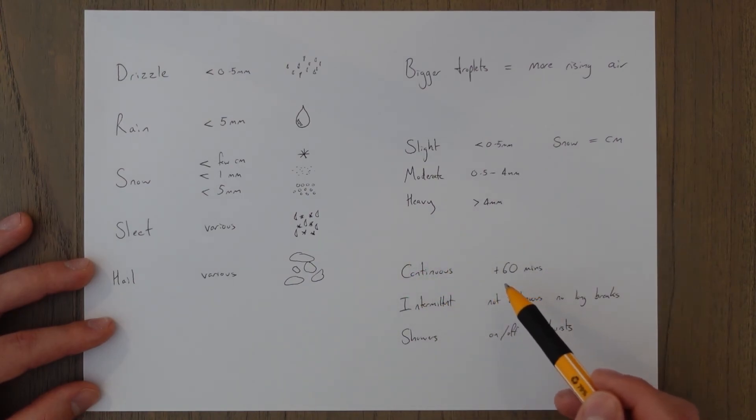If it's anything more than 60 minutes or 60 minutes or more you would call it continuous precipitation. If it's intermittent it's kind of a weird one because it's not continuous but it's also not as defined as showers. So it's not all the time but there's no large breaks in the precipitation.